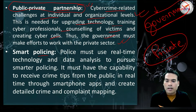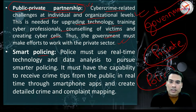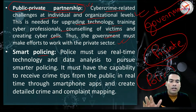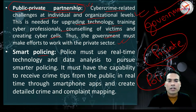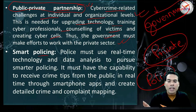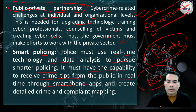The third measure is smart policing. India's police are still operating on a 19th century model and policing methods remain quite orthodox. Police must use real-time technology and data analysis to pursue smarter policing. They must have the capability to receive crime tips from the public in real-time through smartphone apps and create detailed crime and complaint mapping.